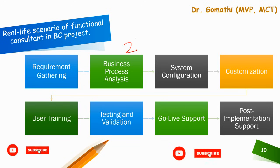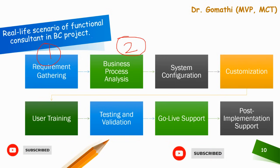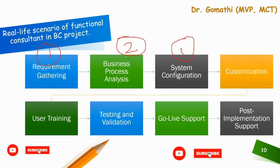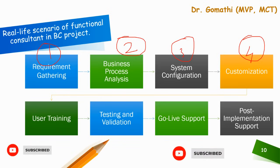The third phase is system configuration — based on gathered requirements and process analysis, you configure Business Central to align with the company's specific needs. This involves setting up the chart of accounts, defining item categories, configuring sales and purchase processes, and integrating with other systems if necessary. The fourth phase is customization — in some cases, the client may have unique requirements beyond the standard features of Business Central, and you work with the technical team to design and implement customizations to meet these specific needs.